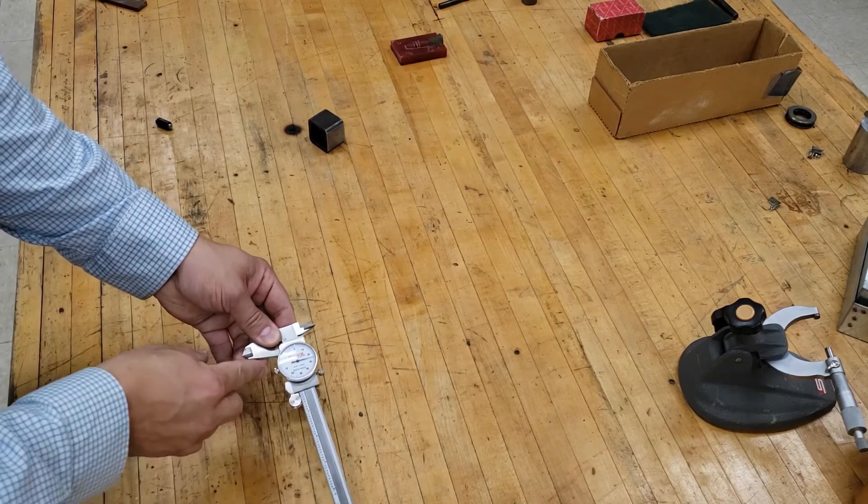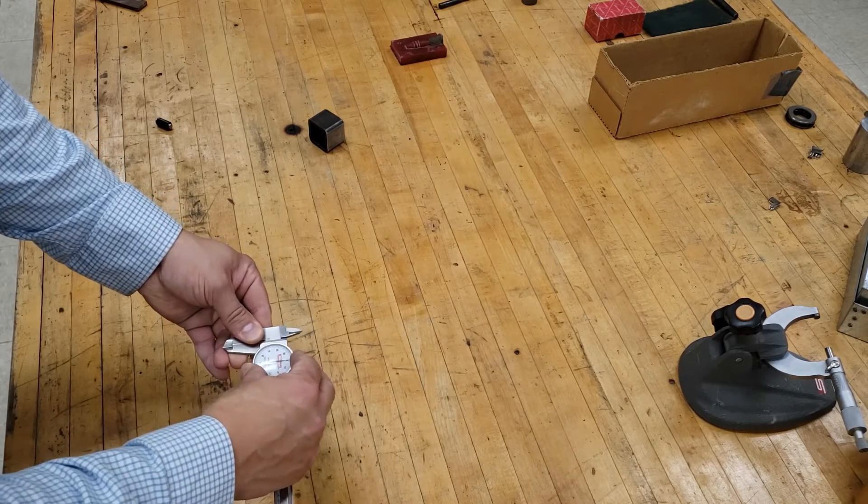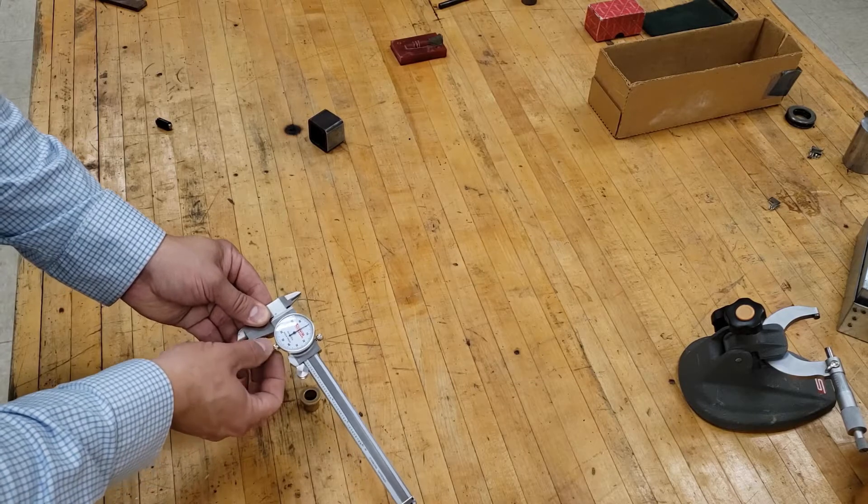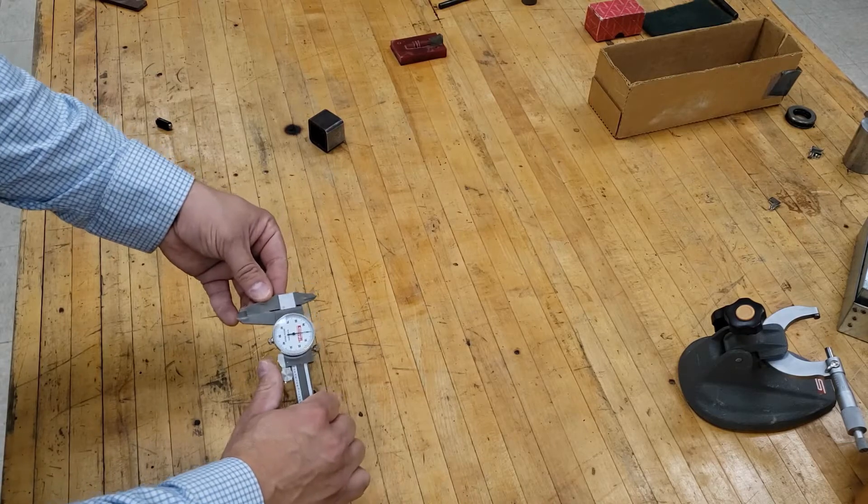So you will loosen the screw at the bottom. Once it is closed, move the dial to read exactly zero. Then tighten up the bottom screw. At this point, when you come back and close it, it should read exactly zero.